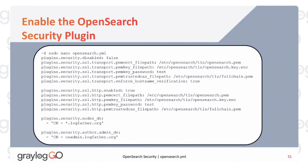First we're going to enable the OpenSearch plugin — setting plugins.security.disabled to false, so the double negative means it is enabled. We configure both the HTTP and the transport layer to use our OpenSearch certificates. The HTTP section refers to clients connecting into OpenSearch such as Graylog, and the transport section is for OpenSearch nodes talking to each other, because we definitely want that encrypted as well.